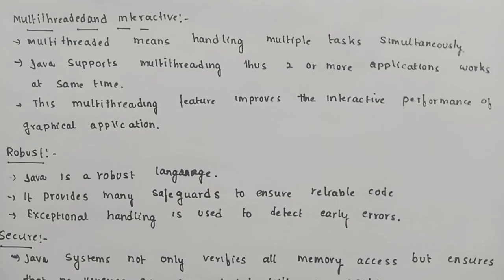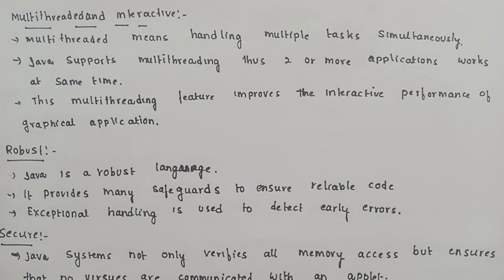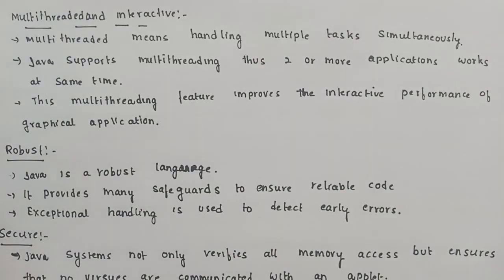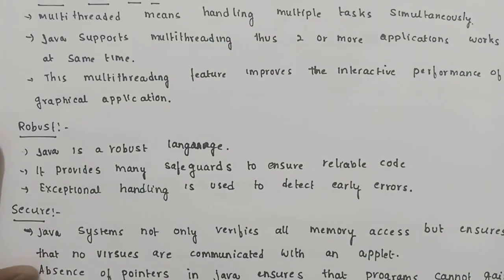Multi-threaded and interactive: multi-threaded means handling multiple tasks simultaneously, more than one task is executed at the same time. Multi-threading means two or more tasks run at the same time. We can do more than one task at the same time — edit, download — and the system will improve its performance.